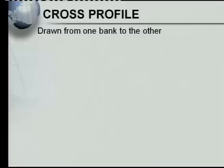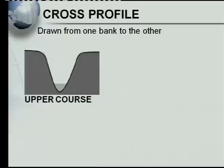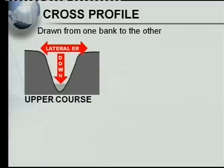Now let's look at the cross profile of a river. A cross profile is drawn from one bank of the river to the other — that's the key difference from the longitudinal profile. In the upper course, the cross profile looks like a deep, narrow V-shape. The reason is that erosion here is more downward than lateral or sideways.